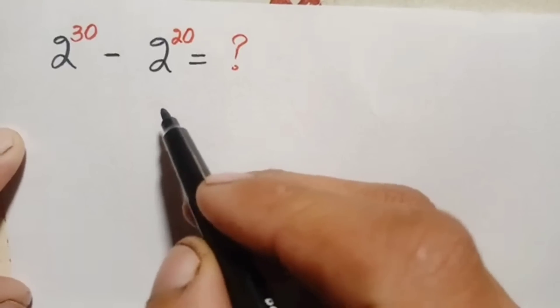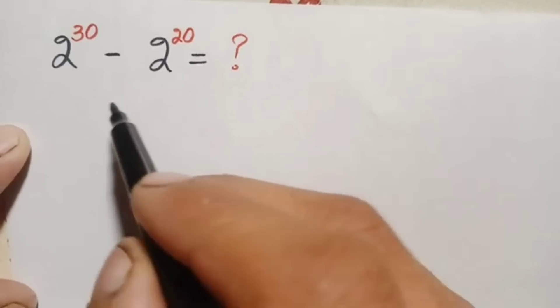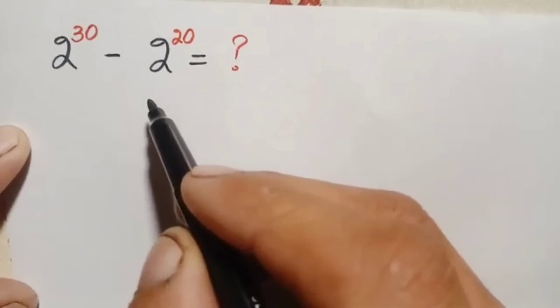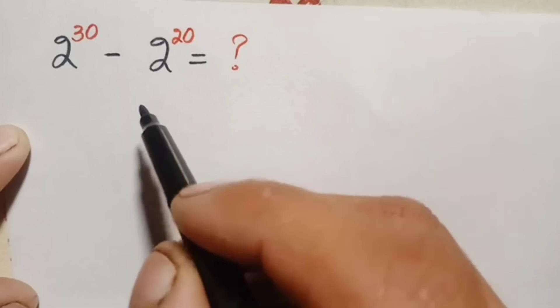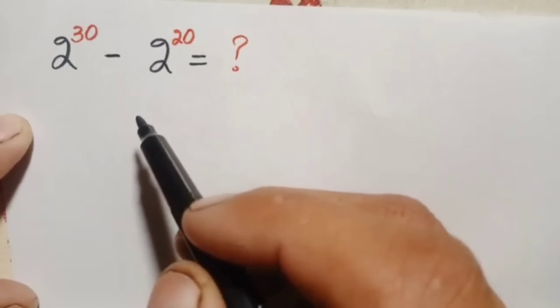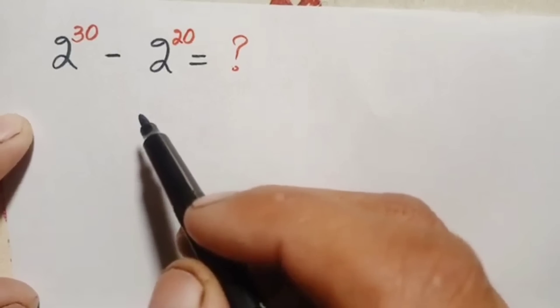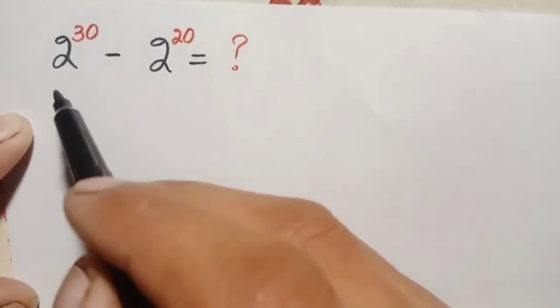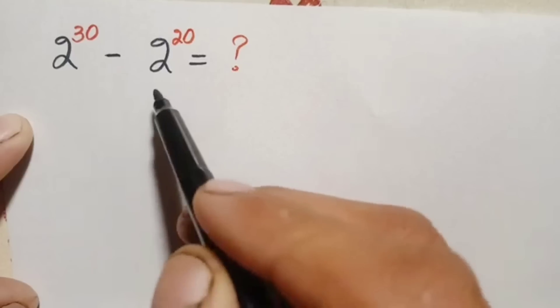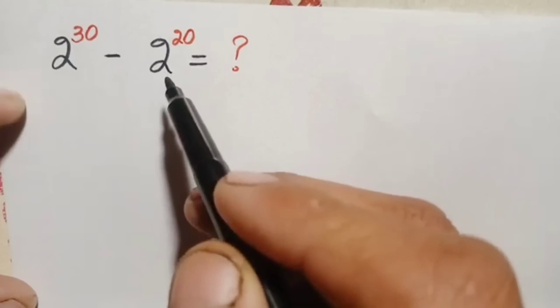Hello everyone, welcome. How to solve this nice and interesting exponential math problem without using a calculator and without any standard multiplication, which is 2 raised to power 30 minus 2 raised to power 20.